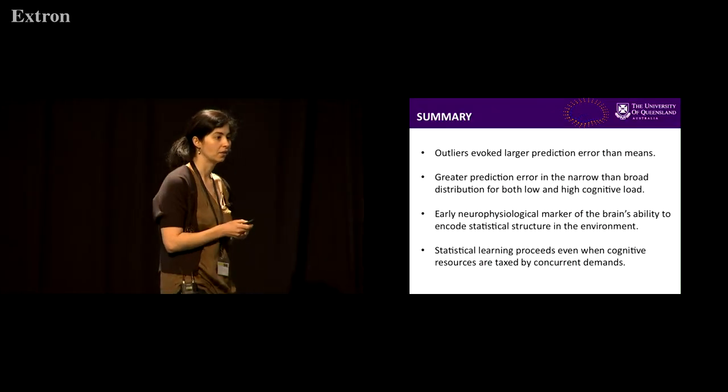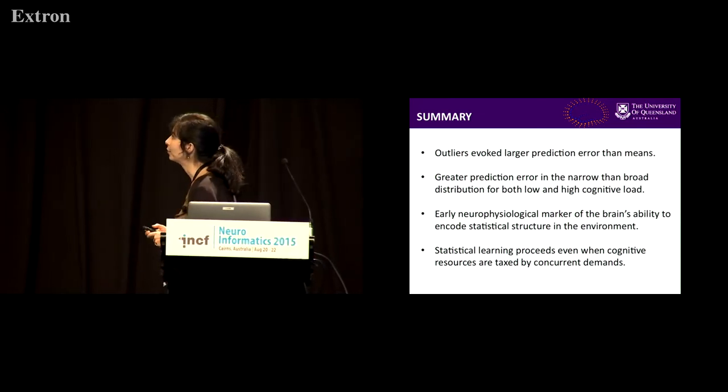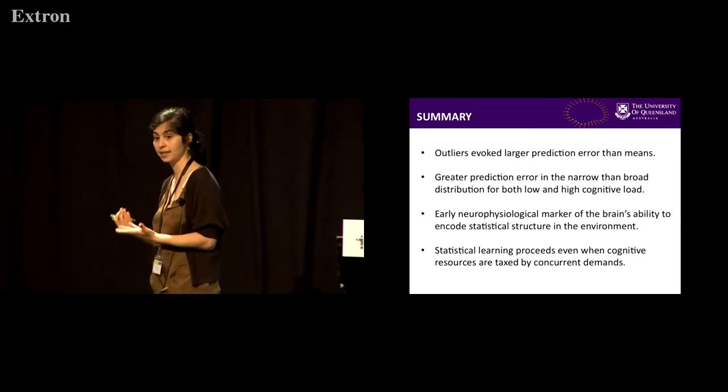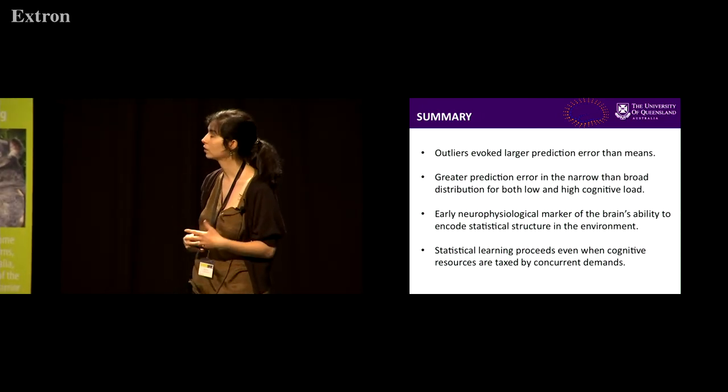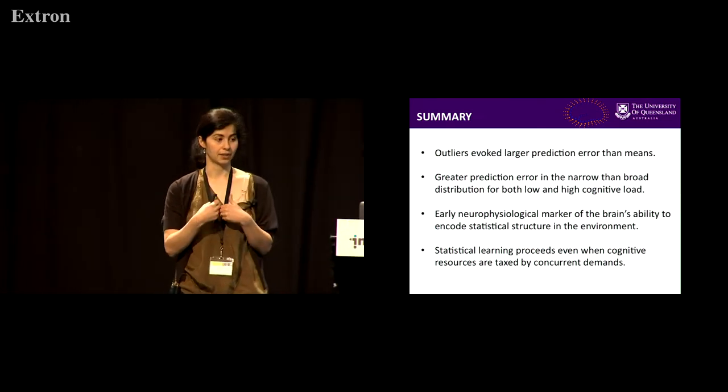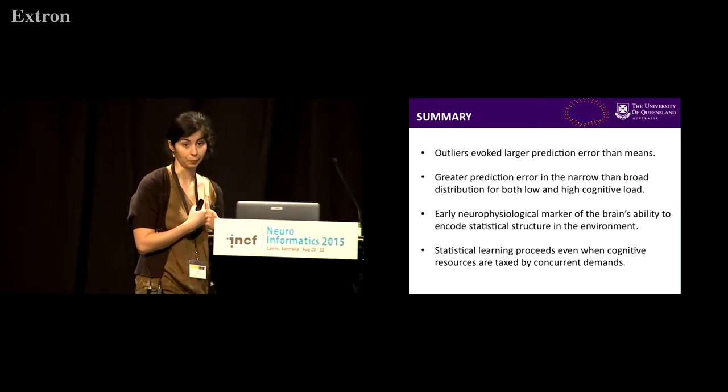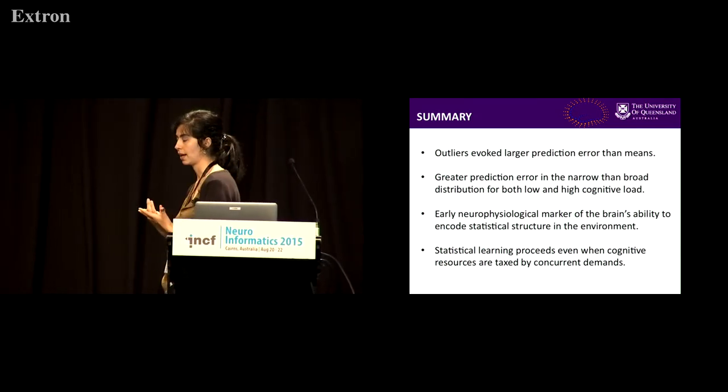Okay, so that brings me towards the end. I think I might have been a bit too quick. So what does this mean? I've showed you that outliers evoke larger prediction error responses than sounds centered at the mean of a distribution. This really shows that the brain is sensitive to outlier detection.